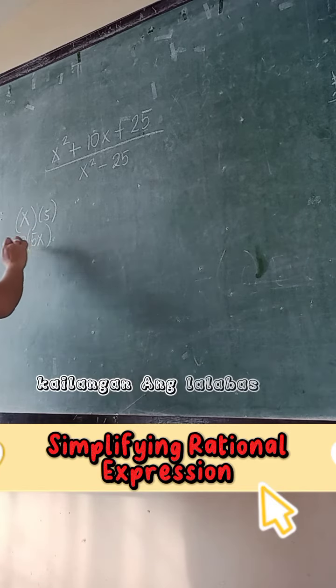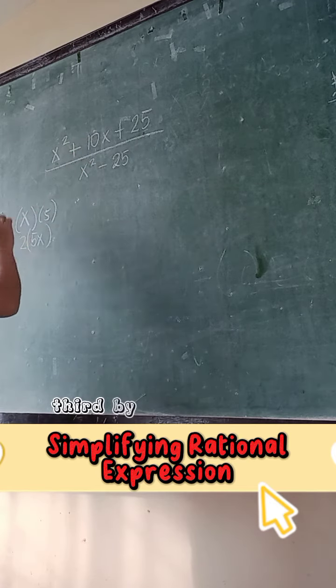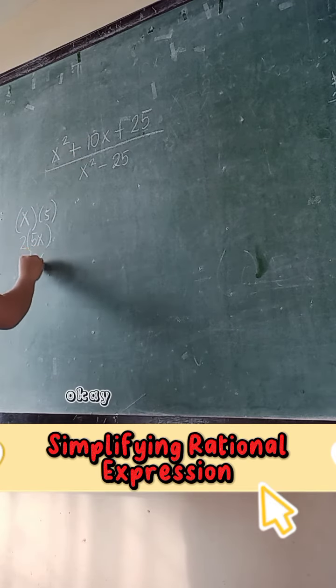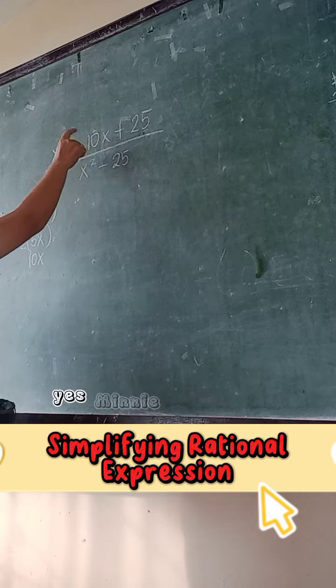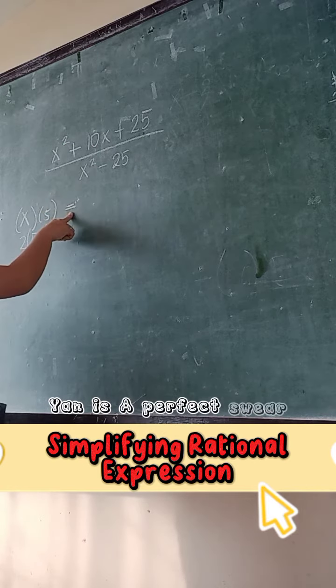5 times 2x. 10x. Okay, therefore, middle term ba? Yes. Meaning to say the given trinomial is a perfect square.